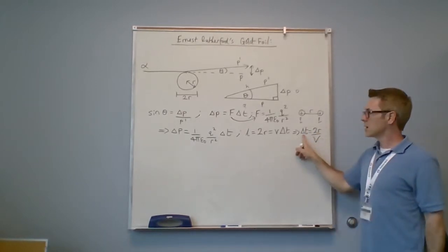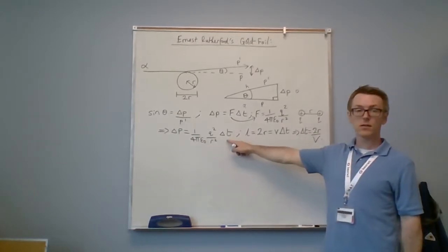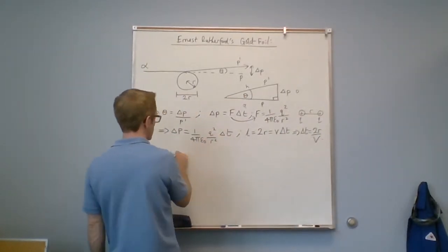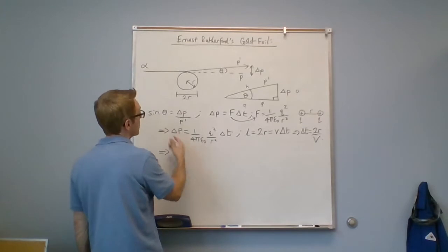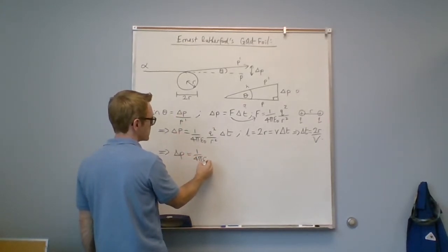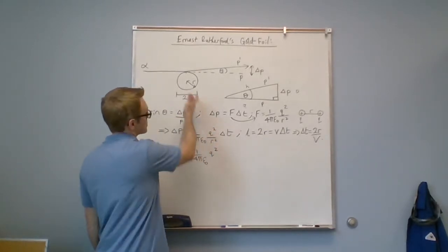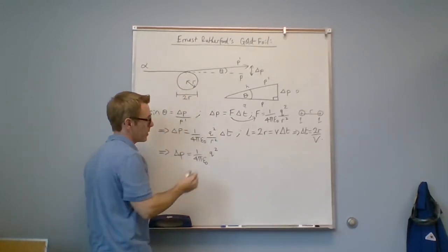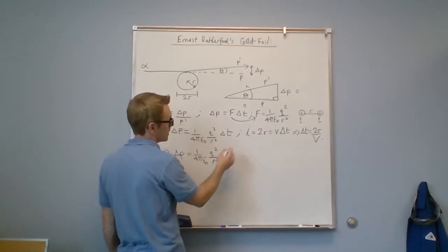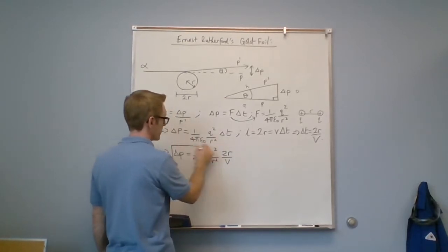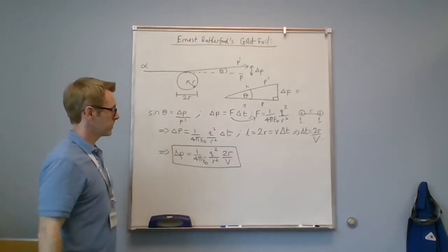We're now going to insert delta T, which is 2r over v, back into this equation. So we've got the change in momentum caused by a collision with the gold atom is this constant, 1 over 4 pi epsilon zero, times the charge squared. One of the charges will be the nucleus, one of the charges will be the alpha particle, over r squared. And delta T is 2r over v.